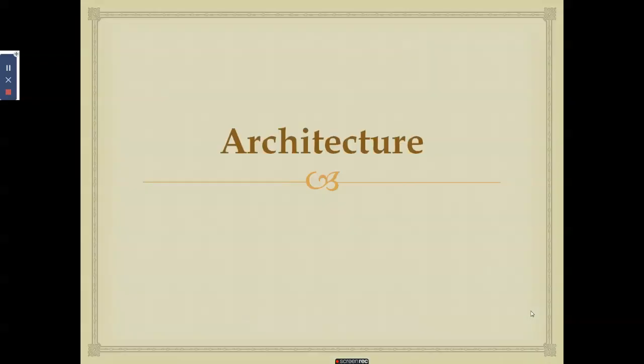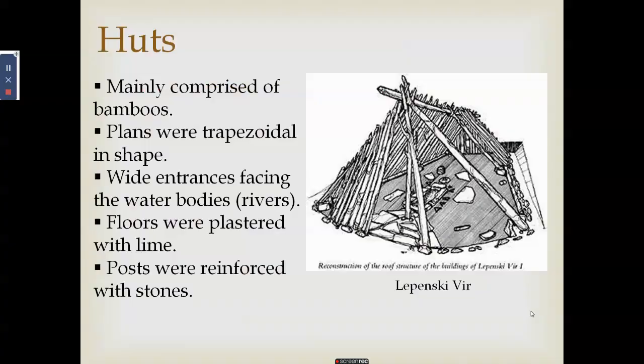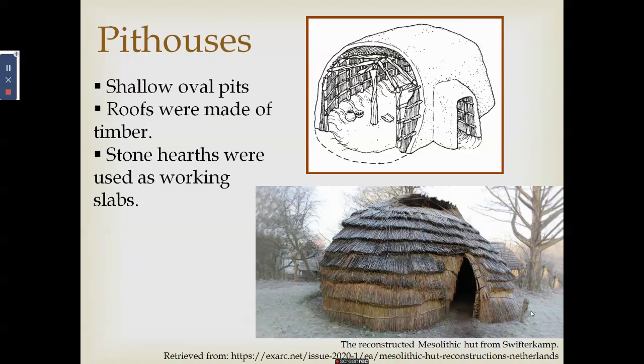For Mesolithic architecture, as mentioned earlier, cemeteries and burial structures begin to appear — structures are no longer just for shelter and protection. Huts are still present as dwellings, and pit houses are still used as well.